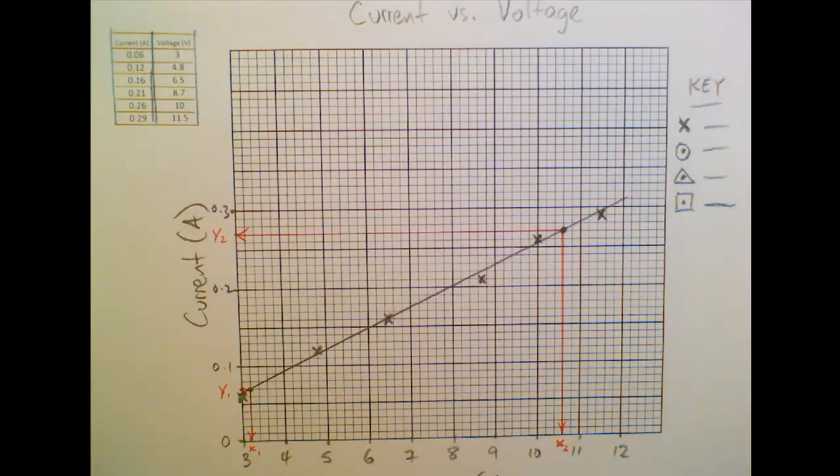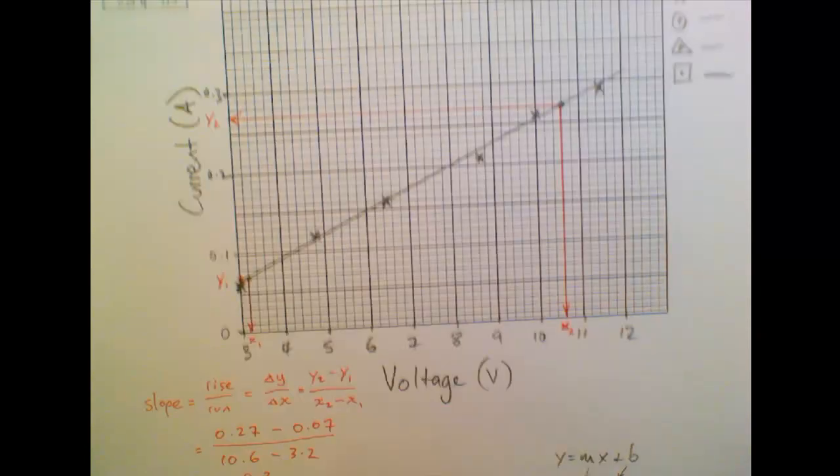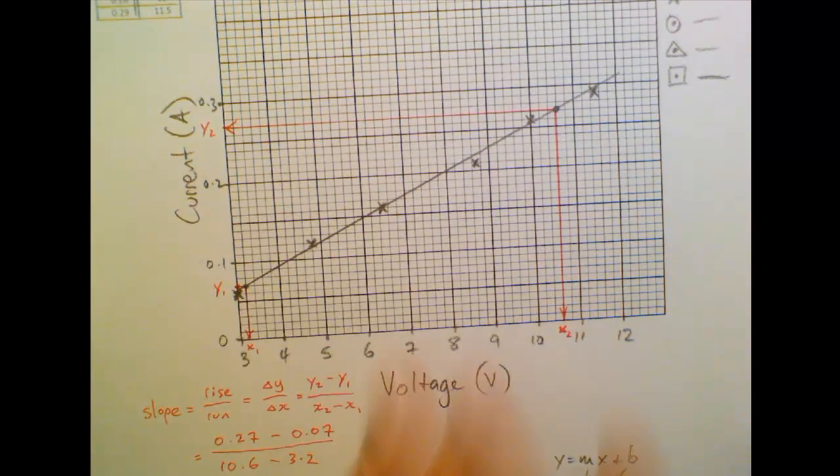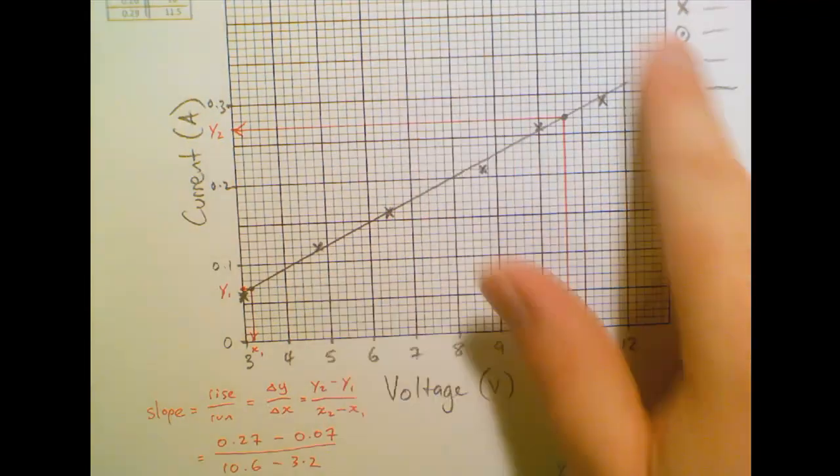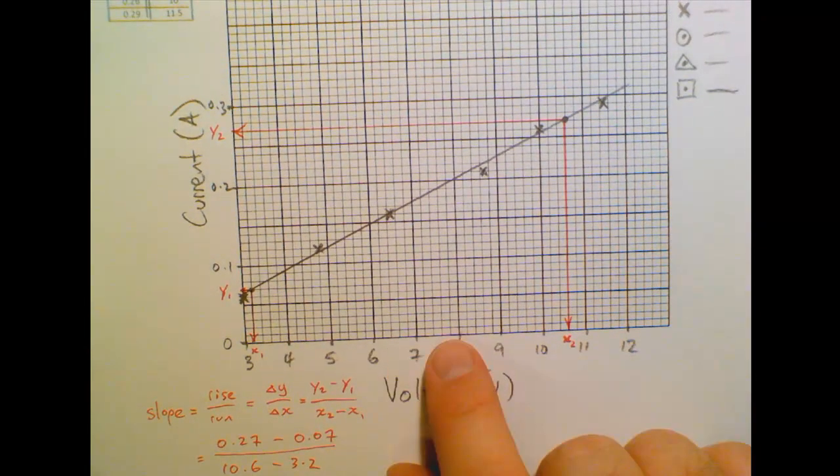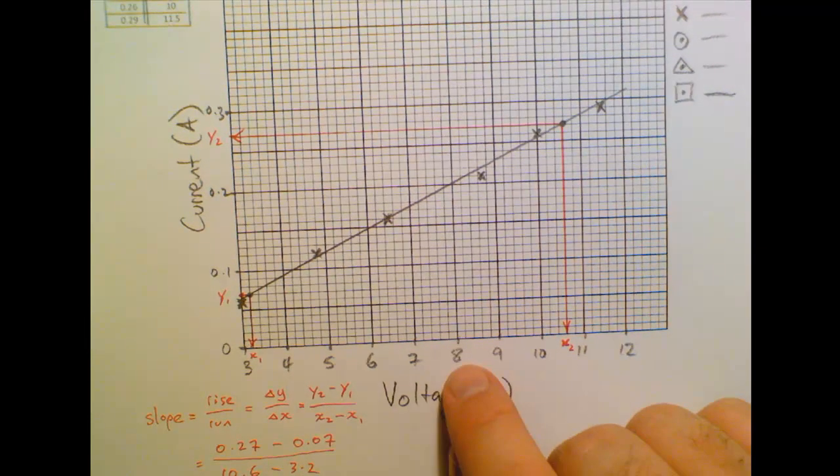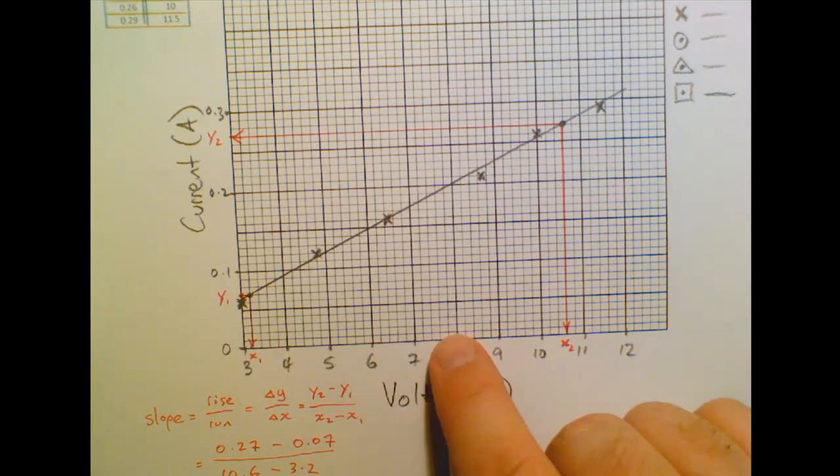So that hopefully covers all the basics of plotting a graph. And in years 7 and 8 you won't need to use the slope method probably. You might be doing interpolation and extrapolation. So you might be asked what is the current when the voltage is 8?